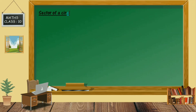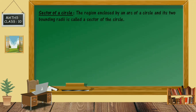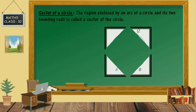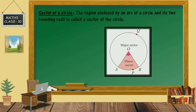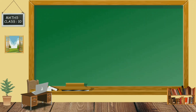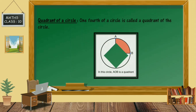The next concept is the sector of a circle: the region enclosed by an arc of a circle and its two radii is called a sector of the circle. Next is the quadrant of the circle: one fourth of a circle is called a quadrant of the circle.